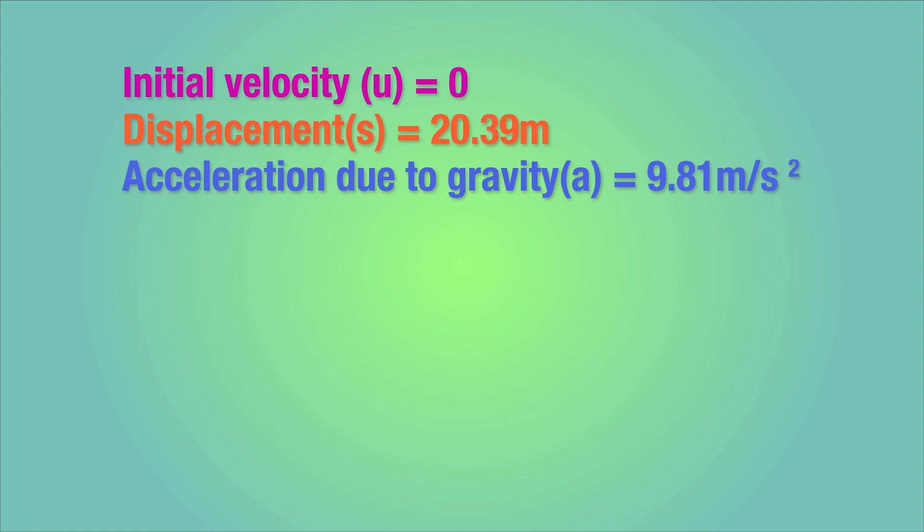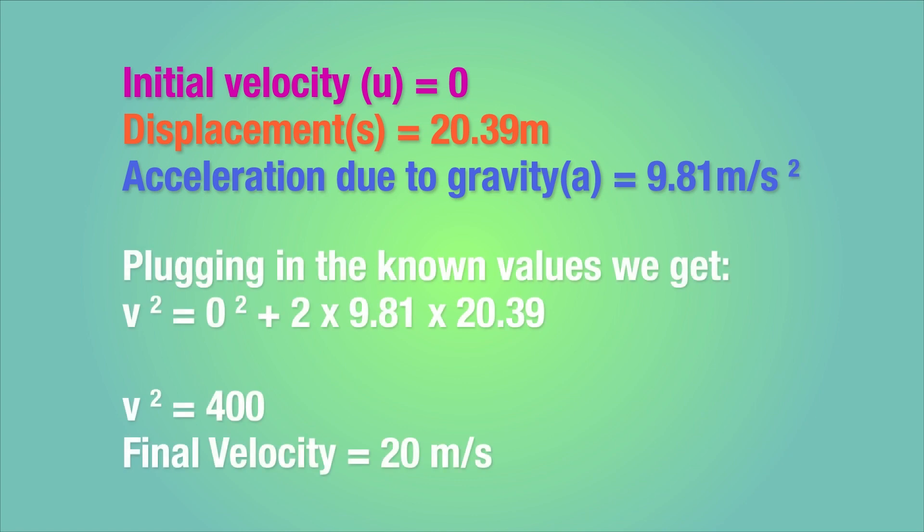Hey that rhymed! When we plug in the values we already know, we get something along these lines. When we solve for the final velocity, we get v2 equals to 400, which means that the final velocity is equal to 20 meters per second.